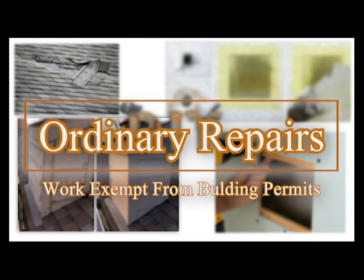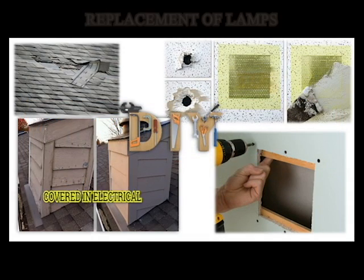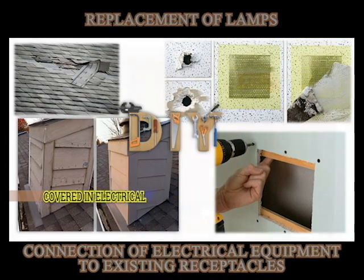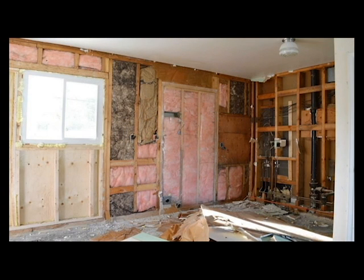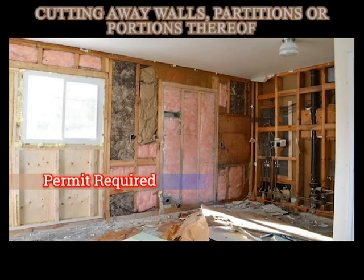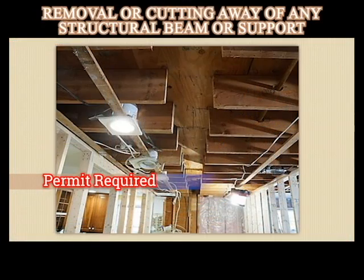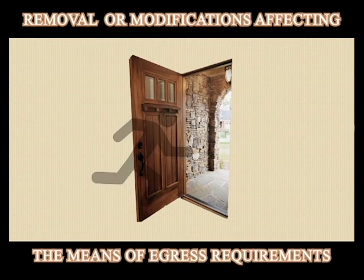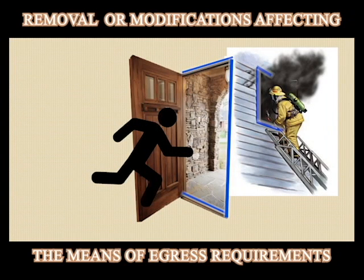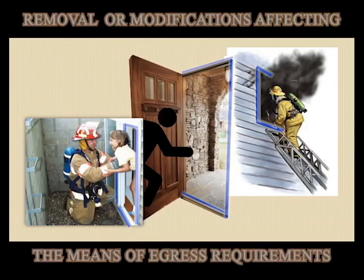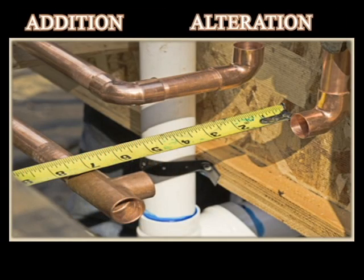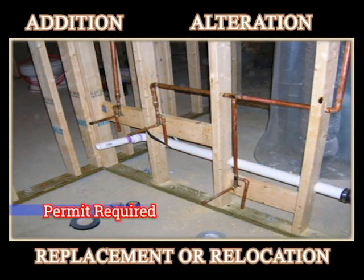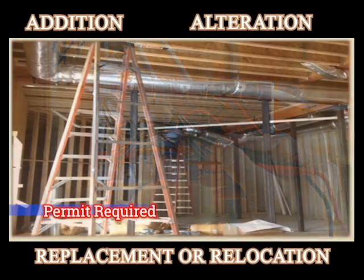Ordinary repairs exempt from building permits include minor electrical work previously covered. However, repairs may not include cutting away of any walls, partitions, or portions thereof, or the removal or cutting away of any structural components of a building. Ordinary repairs cannot consist of removal, changing, or rearranging of required emergency escapes. Additions, alterations, replacement, or relocating of water, sewer, or gas pipes are not exempt. Similarly, electrical wiring or mechanical work are not exempt from a permit.